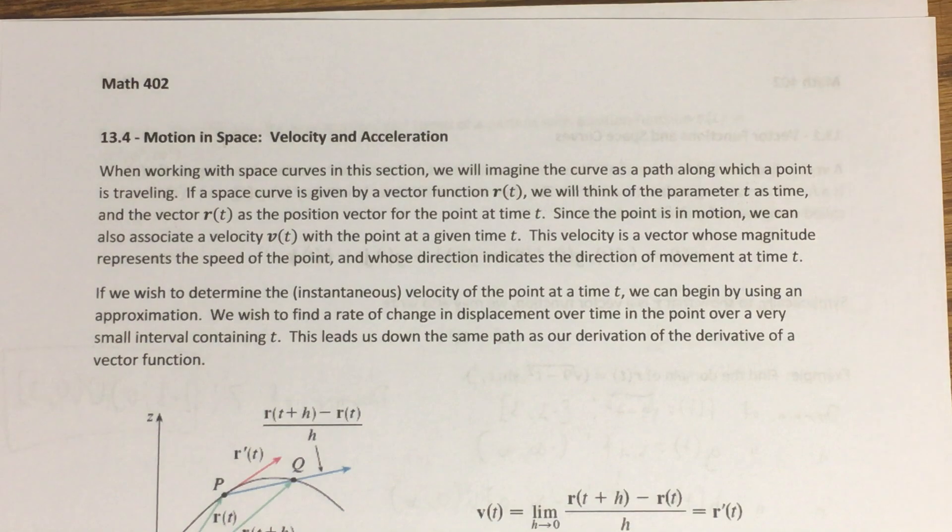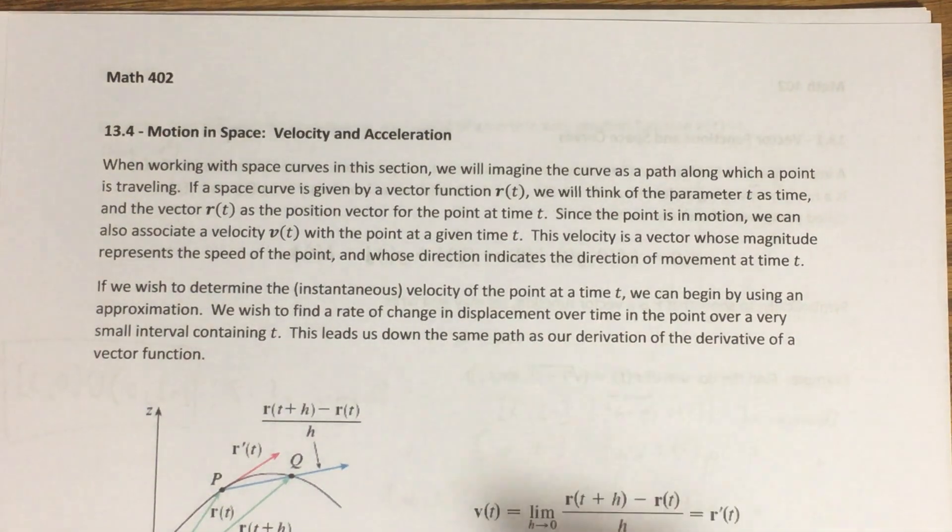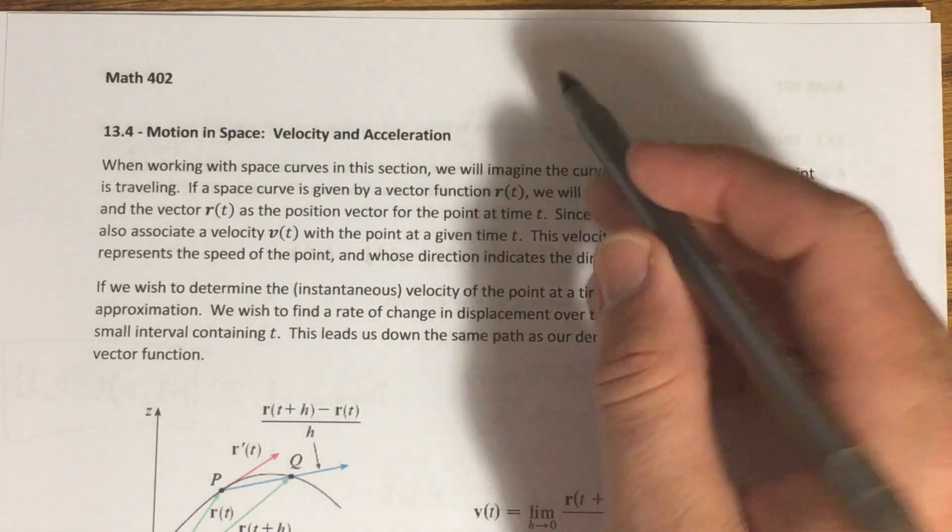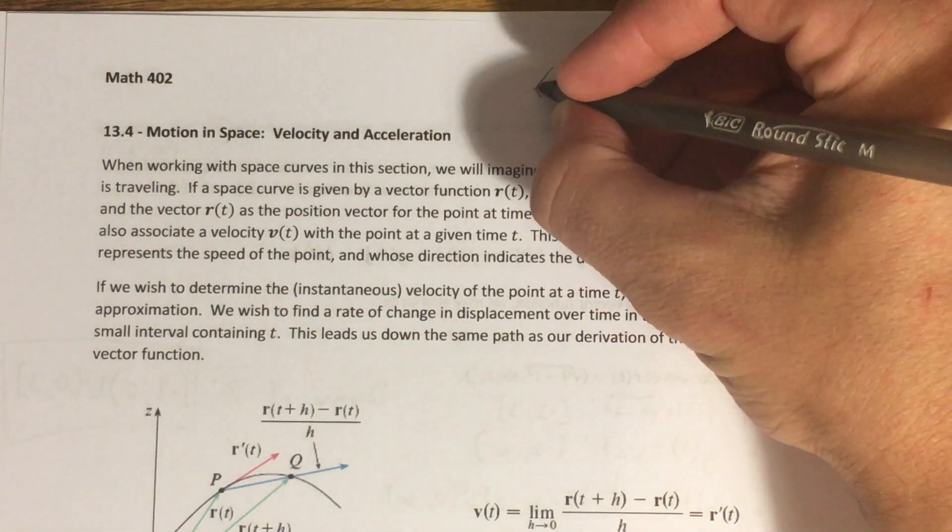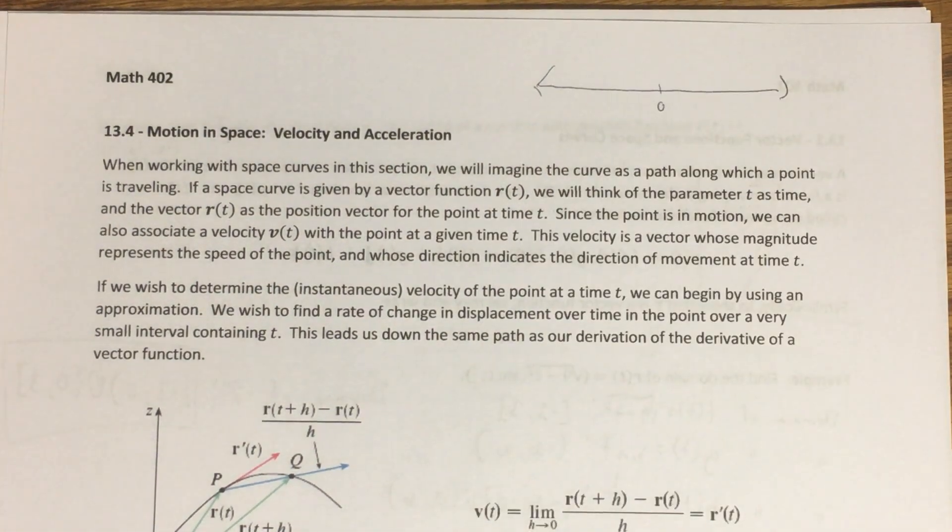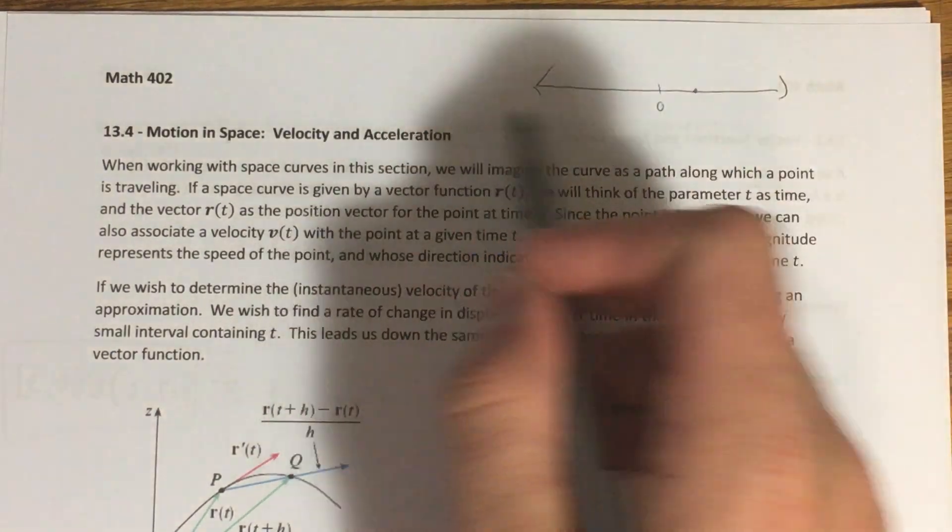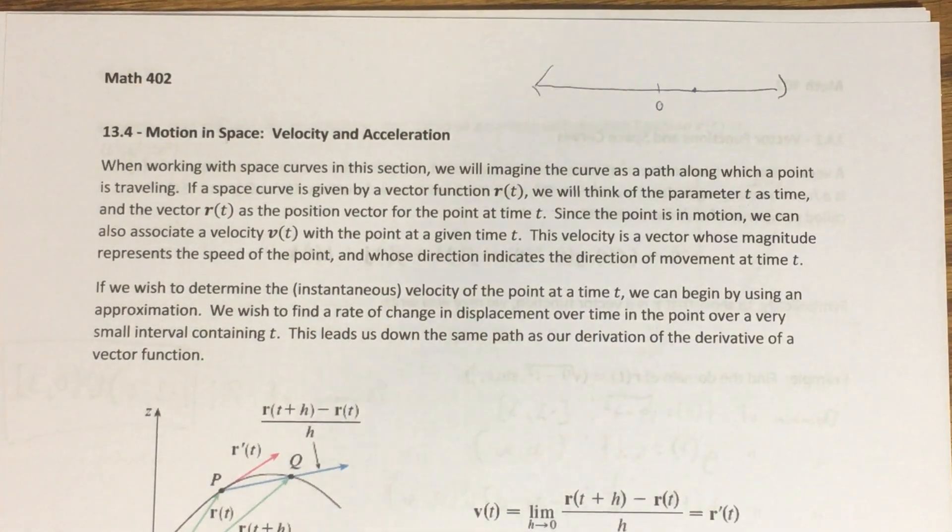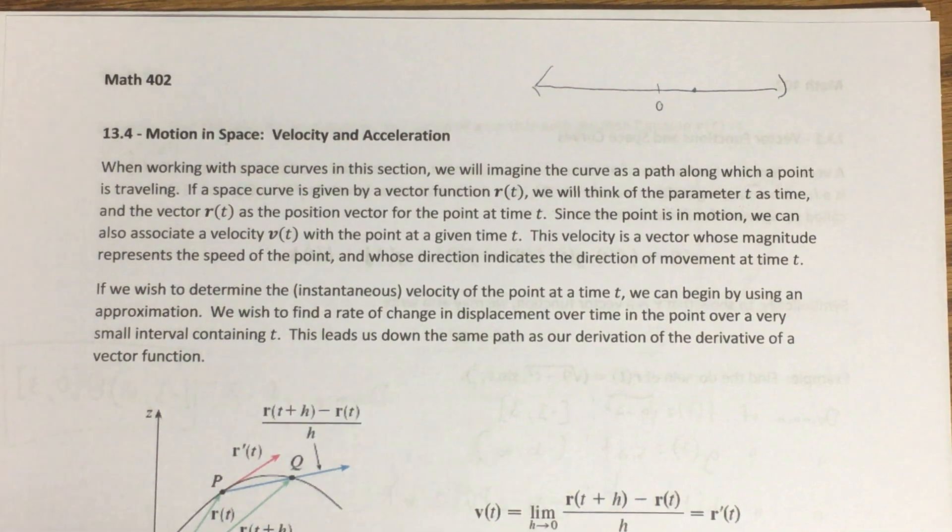You see, the difficulty with the case in Calculus 1 is if a particle is moving along a number line, where its initial position is at, say, zero, that particle can move left or right, and that's basically it. And those are the cases where we think about position, velocity, acceleration.